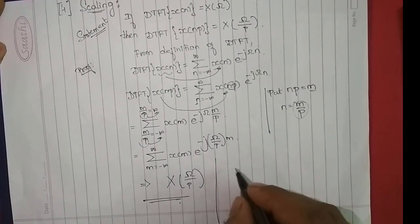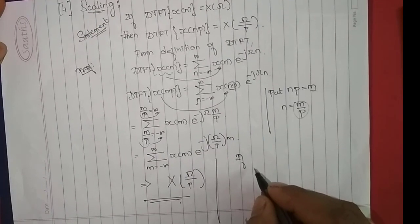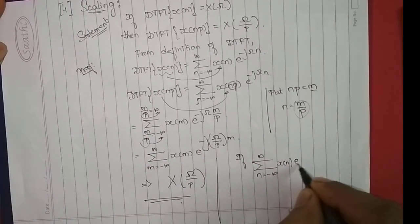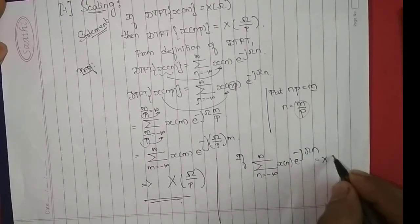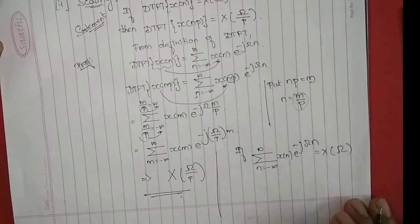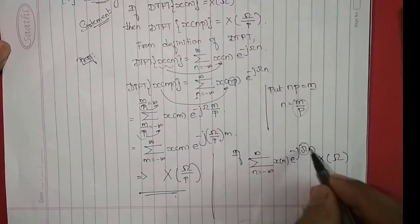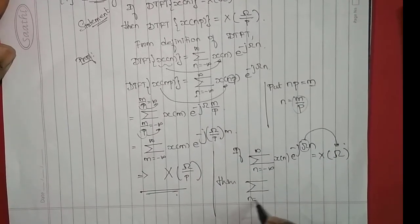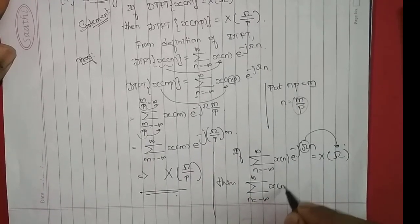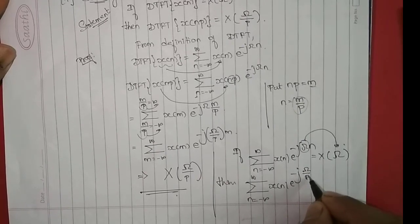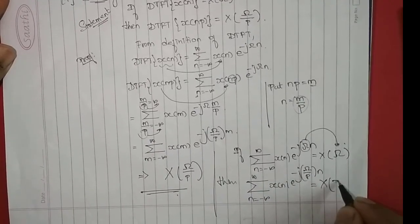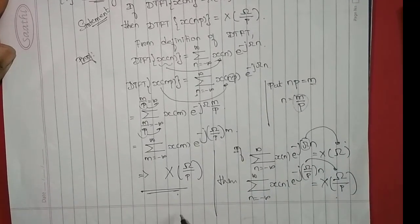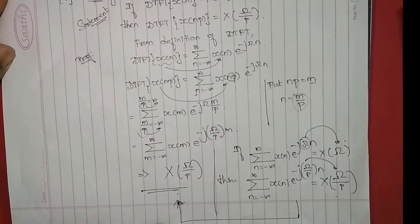Let me show you how I wrote this step. If summation n varying from minus infinity to infinity of x of n, e power minus j omega n is given by capital X of omega, then omega goes as it is to the right hand side — this is how I wrote this step. Thank you.